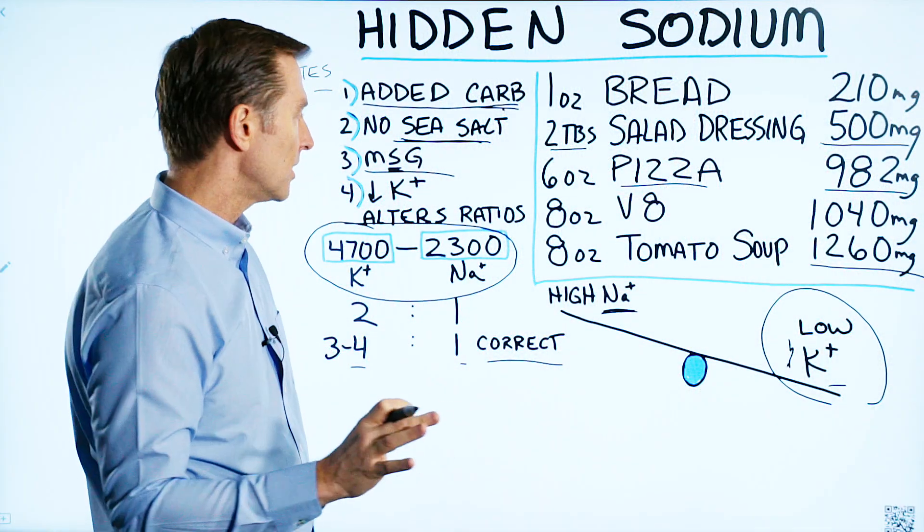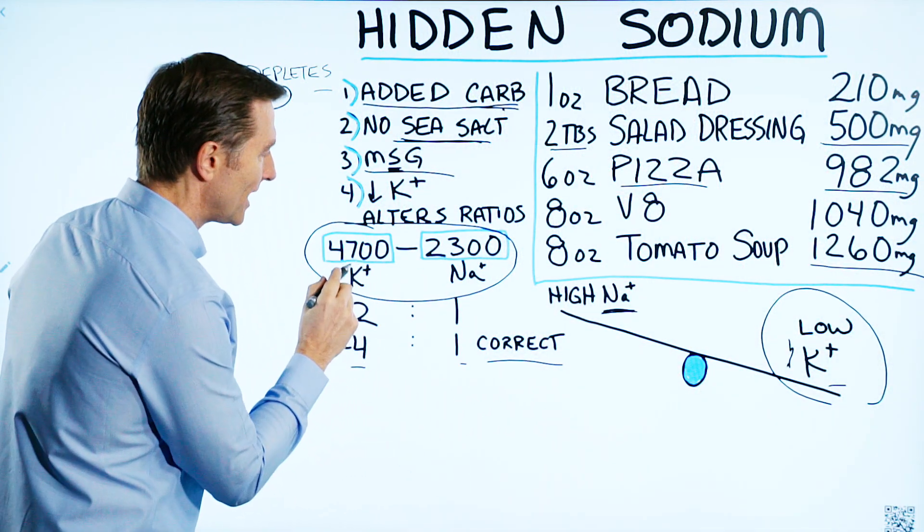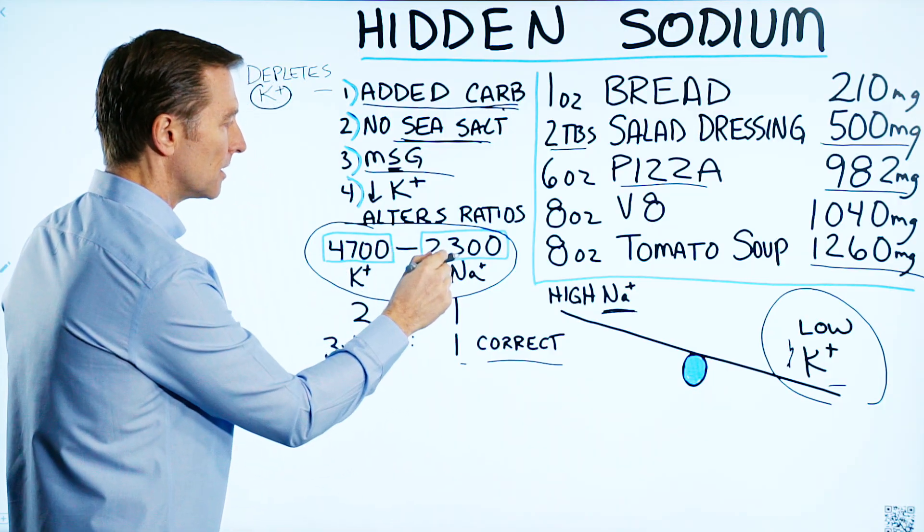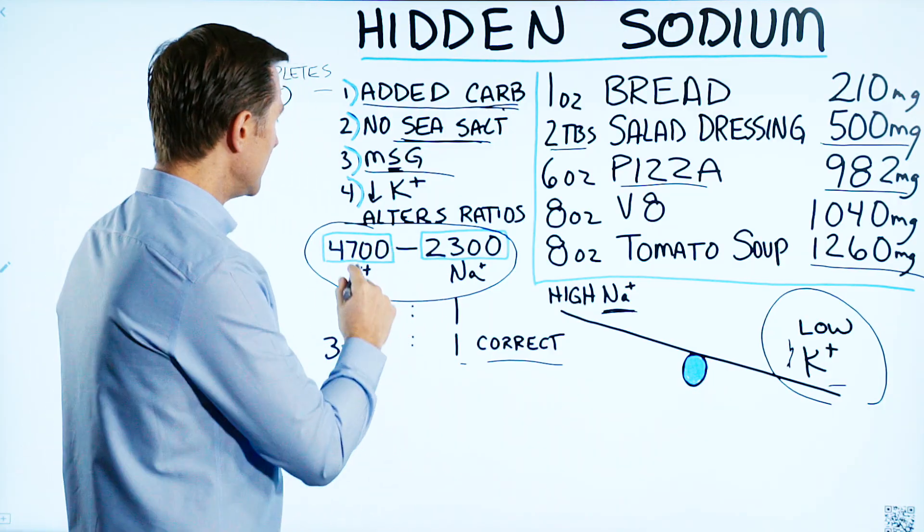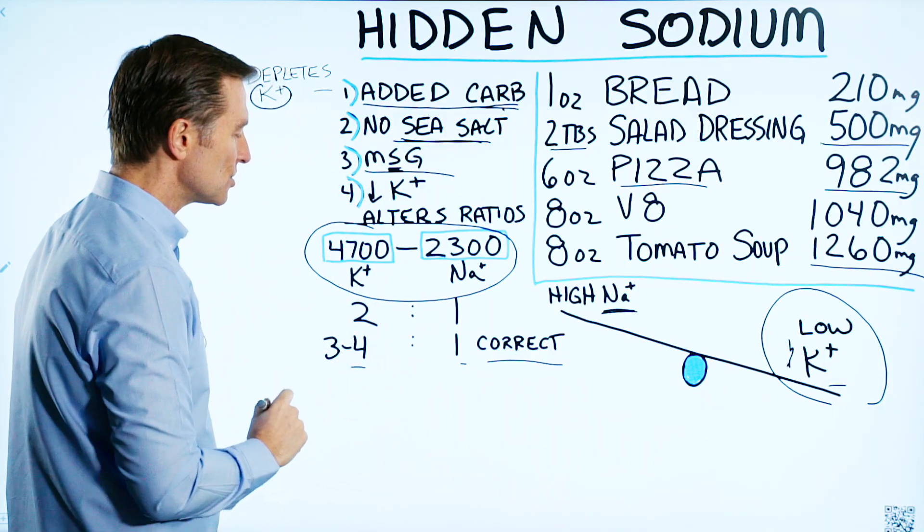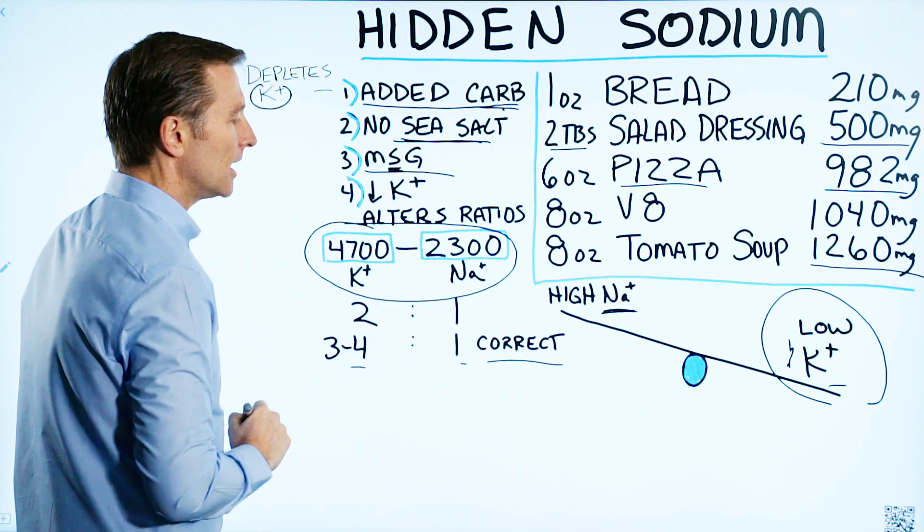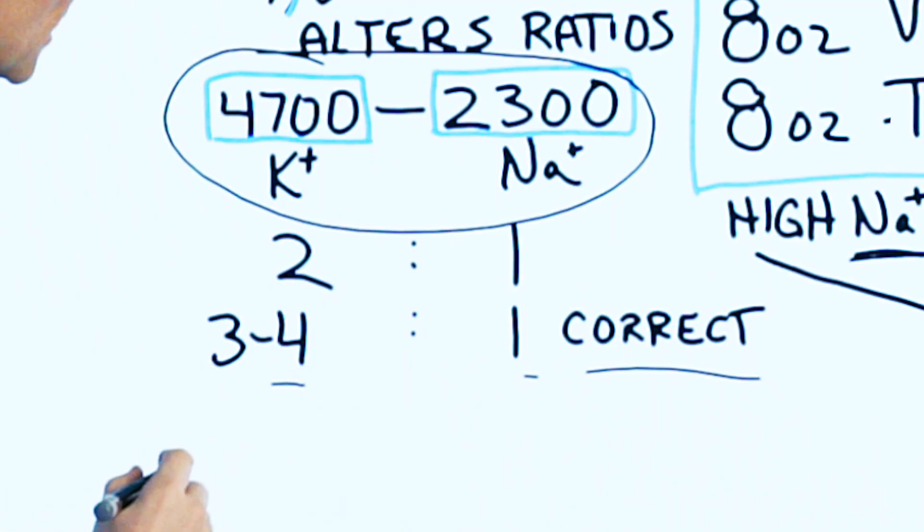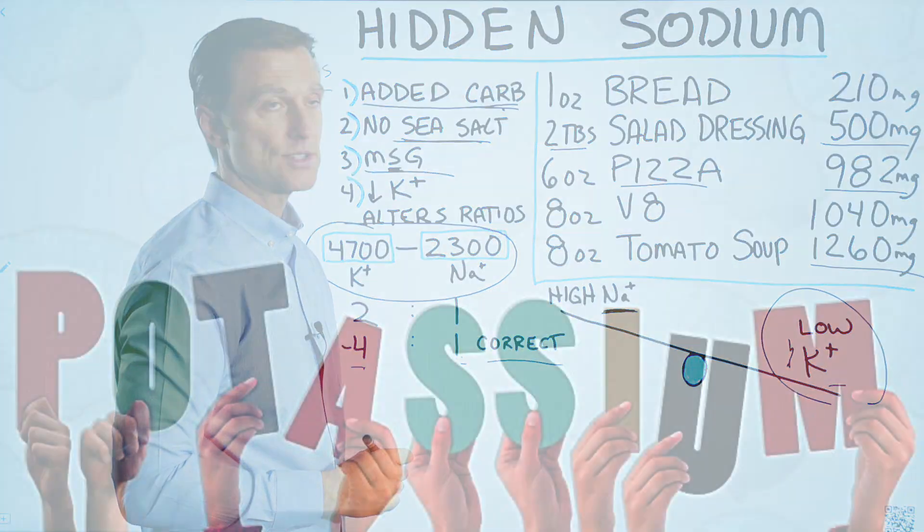The point of this video is to understand that these ratios of potassium to sodium are more important than these minerals individually. As long as you're doing a two-to-one ratio, you're going to be good. If you want to correct it, go up to a three-to-four-to-one ratio, and that'll work even faster.